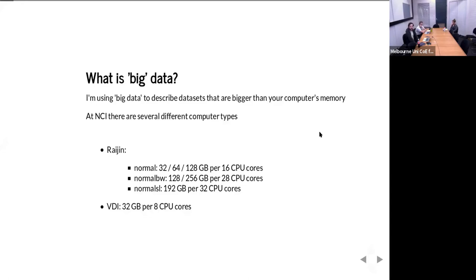So if we've got a terabyte of surface temperature data, we can't do anything with that on any of these nodes. What we have to do is split it up in different ways so that we're not working on the whole thing all at one time.